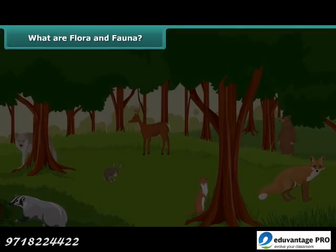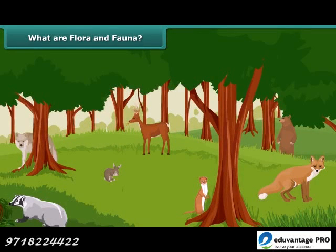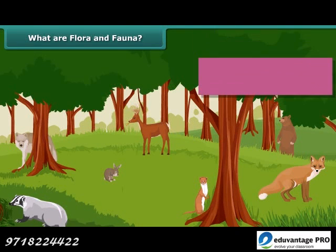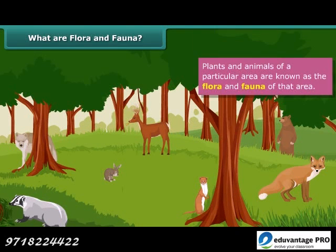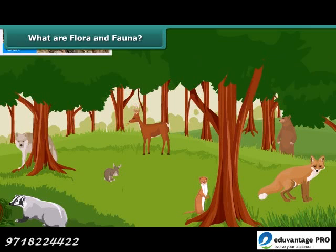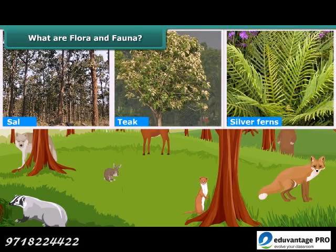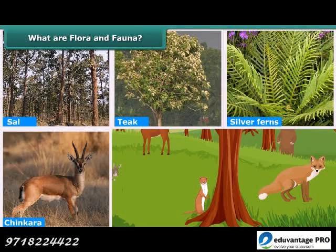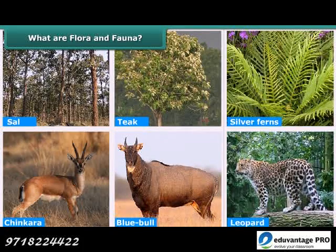You must have observed that some animals and plants typically belong to a particular area. Plants and animals of a particular area are known as the flora and fauna of that area. For example, sal, tea, silver ferns, etc. are the flora, and chicanara, blue bull, leopard, etc. are the fauna of the Panchmari biosphere reserve.